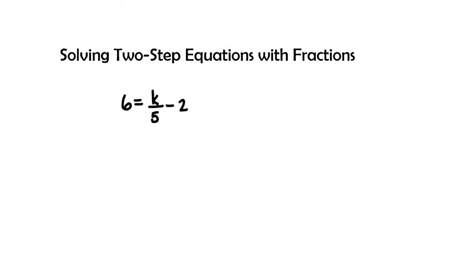In this video we'll be learning how to solve two-step equations with fractions. In our first example we notice that we have a fraction with the variable in the numerator and a constant in the denominator. I'm going to show you how to solve these two different ways so you can pick the way that best suits you. We have in our first example 6 equals k over 5 minus 2.